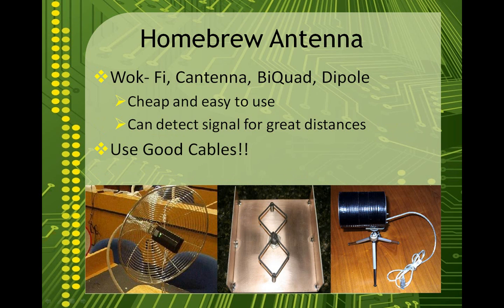Here are some examples of the kinds of antennas that war drivers use. We have a wok-fi, which is basically using a Chinese cooking wok as a parabolic reflector; a biquad in the middle, which is made of wire specifically tuned to pick up 2.4GHz wireless; and a cantenna, which is a directional antenna made from a juice can. These antennas are very cheap to make and easy to use, and they've been used to detect signals for great distances. When combined with larger reflective dishes, they've been known to capture signals for up to 10 miles.